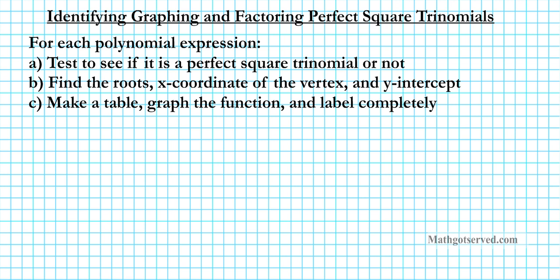Good day students. In this clip we are going to be going over two examples on how to identify, graph and factor a perfect square trinomial. The instructions are as follows: for each polynomial expression, test to see if it is a perfect square trinomial or not, find the roots, x-coordinate of the vertex and y-intercept, and then make a table, graph the function and label completely.